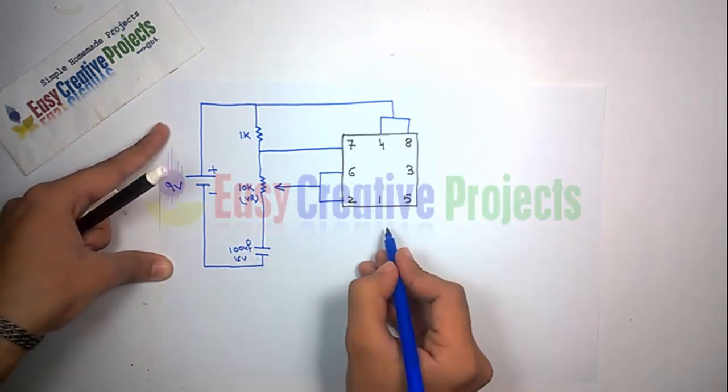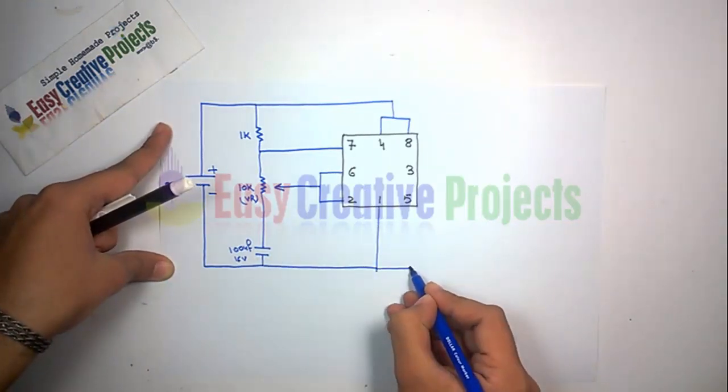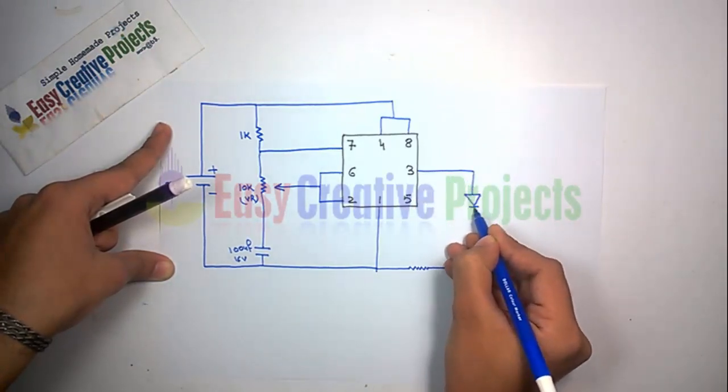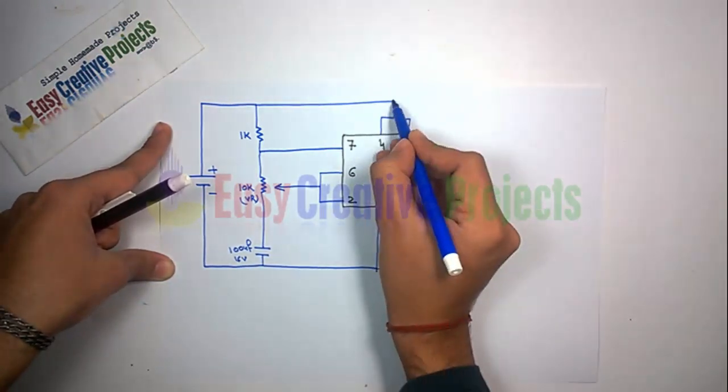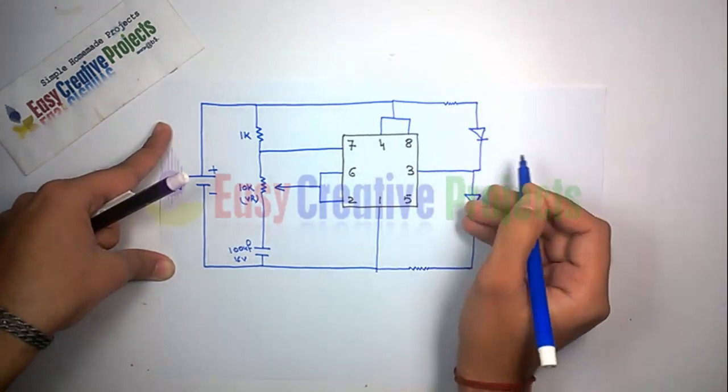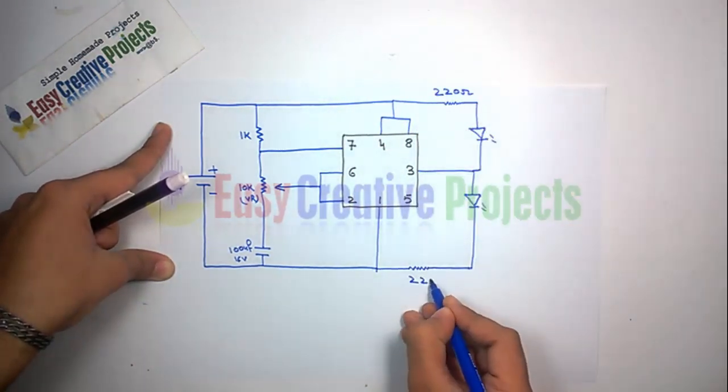Now connect 220 ohm resistor and LED with 3 number pin and 1 number pin, and finally connect another 220 ohm resistor and LED with 4 number pin and 3 number pin.